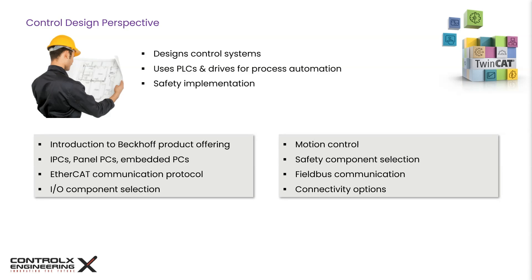Safety is paramount in industrial control systems to protect personnel, ensure equipment integrity, prevent downtime, and maintain regulatory compliance. To meet these demands, we must have a good understanding of the safety requirements of the project and select the right hardware. Often industrial automation requires communications over various field buses to integrate components from different vendors into one control system, which requires the ability to talk to those devices in their field bus system.